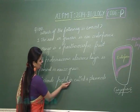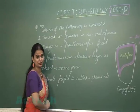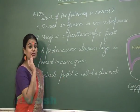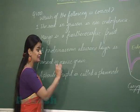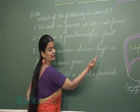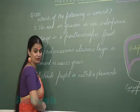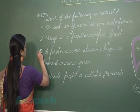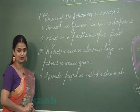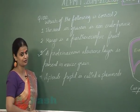The fourth option says a sterile pistil is called staminode — that is incorrect. A sterile pistil is called pistillode, and a sterile stamen is known as staminode. Amongst all these options, the correct one is option number 3.